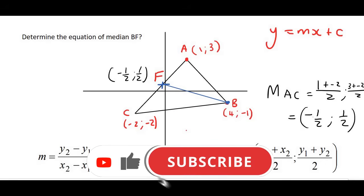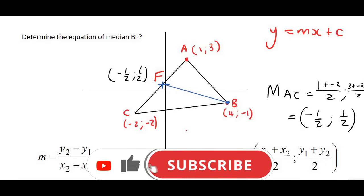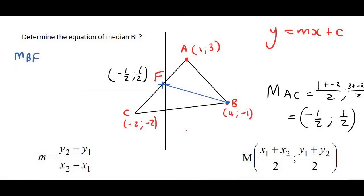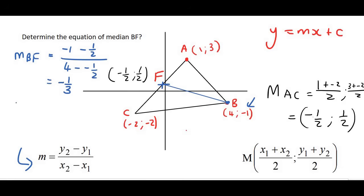Now I can work out the gradient of BF using the gradient formula. I'm going to use point B as my first point, so that's going to be (−1 − 1/2) / (4 − (−1/2)). That's going to give us negative 1/3. So that's the gradient of BF.